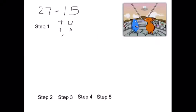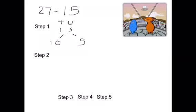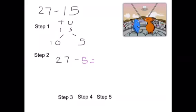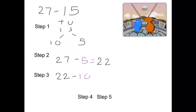Step 2, take away the 5 units from 27. This gives us 22. Step 3. Now you need to take away the 1 ten from 22, leaving us with 12.